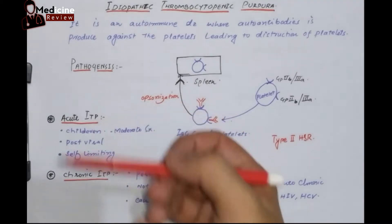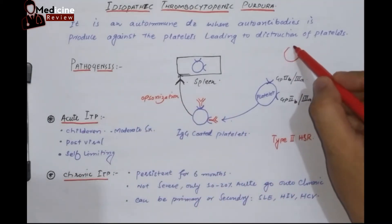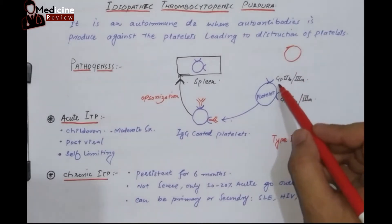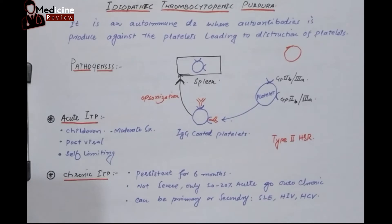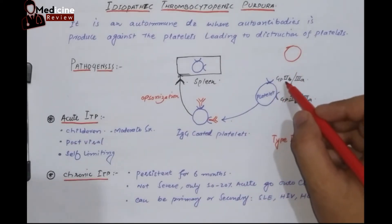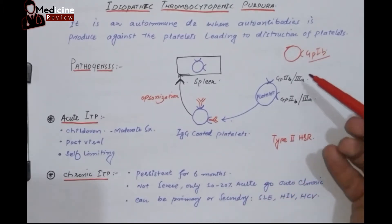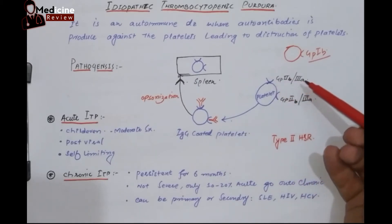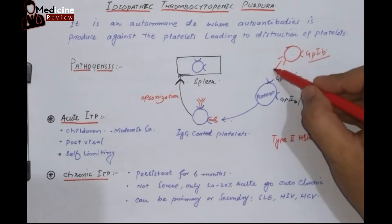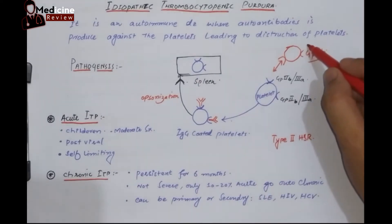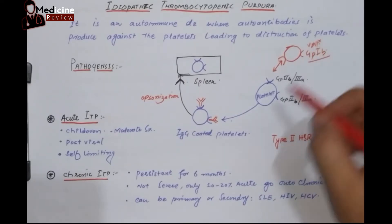Looking at the pathogenesis, on the platelet surface there are two types of receptors. One receptor is used for attachment with another platelet, and the second type of receptor is used for attachment of von Willebrand factor with the platelet. One is GP2B3A and another is GP1B. GP2B3A is used for attachment with another platelet, while GP1B is used for attachment of the platelet along with von Willebrand factor.